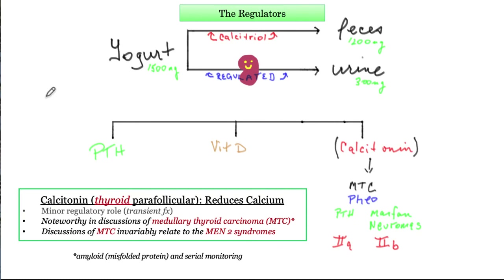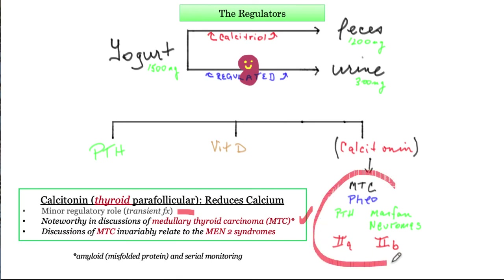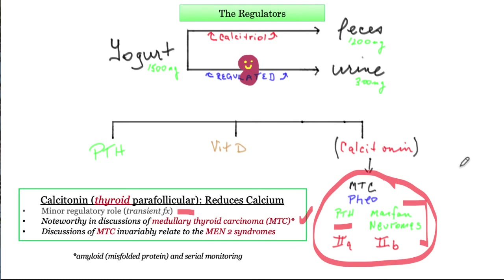The main place you'll see calcitonin mentioned is in the setting of medullary thyroid carcinoma. When they mention medullary thyroid carcinoma, it's in the setting of the MEN syndromes — MEN 2A and 2B. Medullary thyroid carcinoma travels with pheochromocytoma. MEN 2A will also have hyperparathyroidism in the form of hypercalcemia; MEN 2B has marfanoid features. The emphasis here is on calcitonin as a calcium regulator.